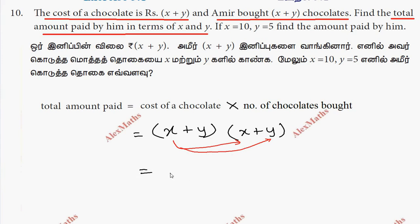Now, x into x is x squared. x into y gives xy. Then the second term times the first term, and second term times second term.